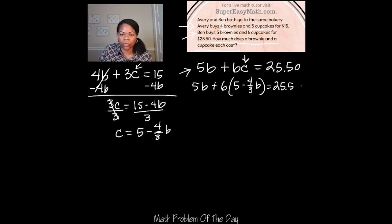Now I'm going to continue considering order of operations and solve the rest of this problem as much as I can. So that means I'm going to start by distributing this 6 throughout the parentheses. So that means the 6 gets multiplied by the 5 and then it gets multiplied by the 4 thirds. So it's 5B plus 30 minus 24 over 3B equals 25.5.